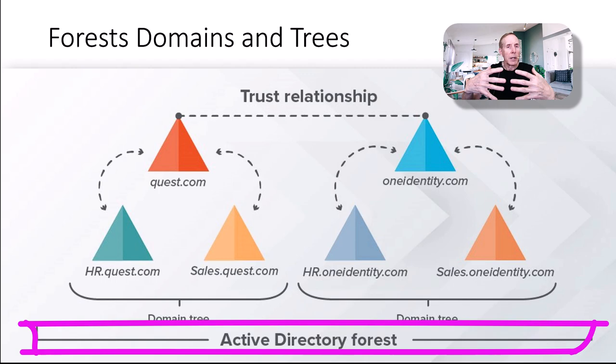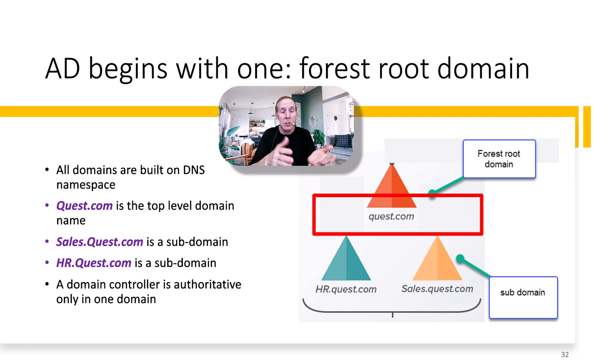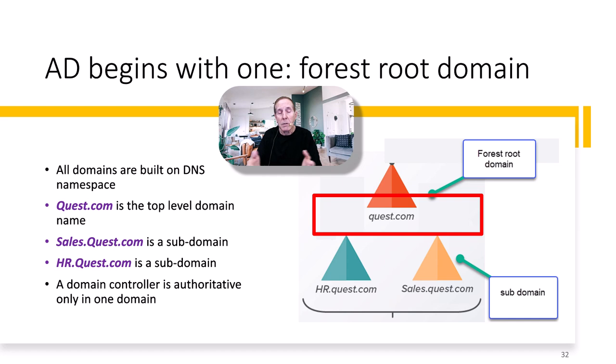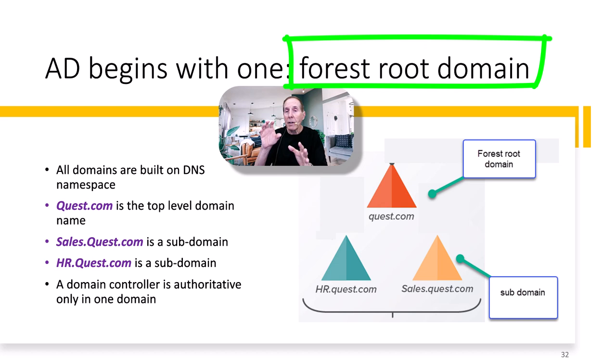It is very important to understand that Active Directory is built on top of DNS — the whole concept of DNS, having top-level domain names, then subdomain names such as sales.quest.com and hr.quest.com as parts of the DNS name quest.com. Everything about DNS integrates into Active Directory. All domains are built on DNS namespaces. All Active Directories begin with a forest root domain, and you can build as many subdomains as you want, though it's not always desirable.